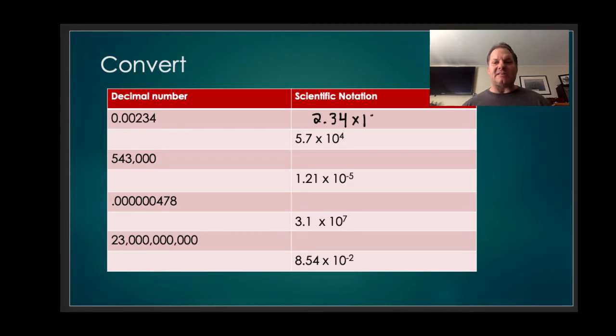And if we do that, we're going to end up with 2.34. So we're sliding the decimal to create a number between 1 and 10. Now we're going to add that times 10 to that. And we're going to ask ourselves, how many times did we slide the decimal?